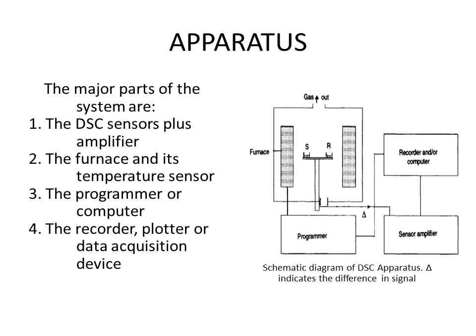Here is the instrumentation of DSC. In the schematic diagram you can see the sample pan, the reference pan, and the furnace or heaters — which may be individual or common for sample and reference. The temperature in the pans and the atmosphere in the compartment can be controlled by adding or removing gas. A programmer controls the temperature program, and the differential signal Delta is sensed, amplified, and recorded by computer devices.